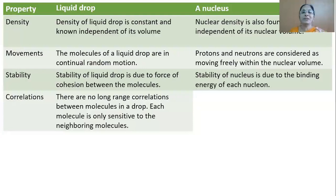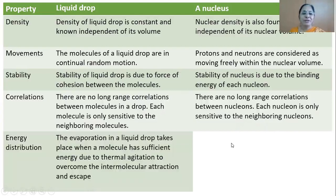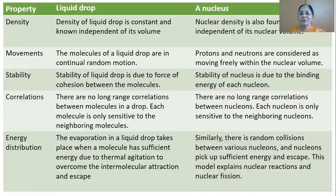Correlations: intermolecular force among molecules is short range — a molecule can attract only its neighboring molecule, not one far away. Same way, inside the nucleus there is no long-range correlation between nucleons; each nucleon is sensitive only to its neighboring nucleons. Energy distribution: evaporation in a liquid drop takes place when a molecule has sufficient energy due to thermal agitation to overcome the intermolecular attraction and escape. Same way, in the nucleus there are random collisions between various nucleons, and nucleons pick up sufficient energy and escape.